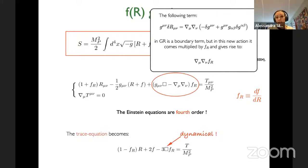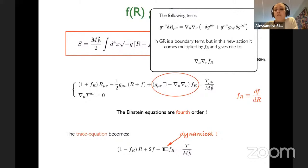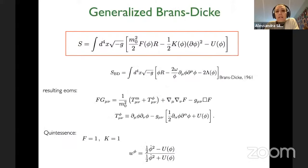Taking the trace of the equations, we see that we really have a new dynamical equation for a scalar field. If we identify f_R — the derivative of f with respect to R — with a scalar field, the equation is just a Klein-Gordon equation. That's why we know f_R as the scalaron. A slight generalization of f(R) is the generalized Brans-Dicke theory. The Brans-Dicke action, formulated in 1961, has a scalar field entering with a non-minimal coupling to the metric, where phi multiplies R, with a possibly modified kinetic term and some potential.